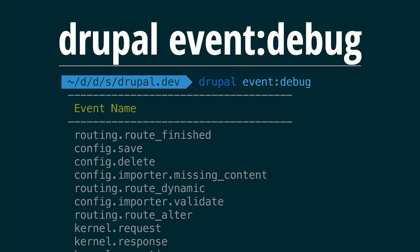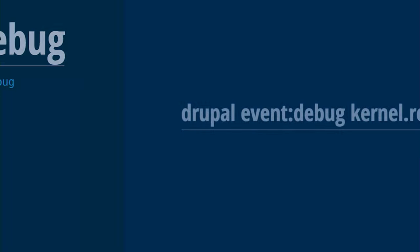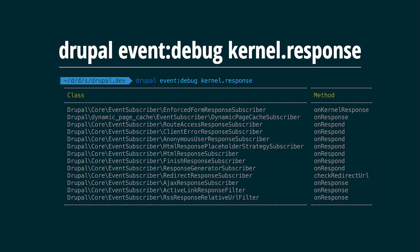Now let's talk about events. We don't have hooks anymore — now we have events. The problem with hooks was that it was hard to determine what happened before or after your implementation. With the 'event:debug' command, you get the list of available events, and if you pass something like 'kernel.response', you can see what implementations exist and in what order they execute for that specific event. You can play with the priority to control execution order.